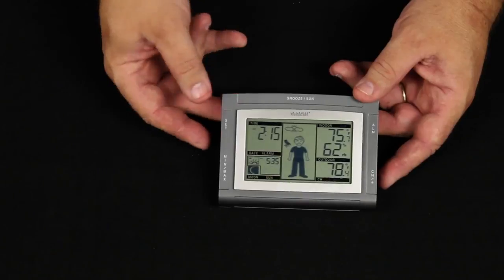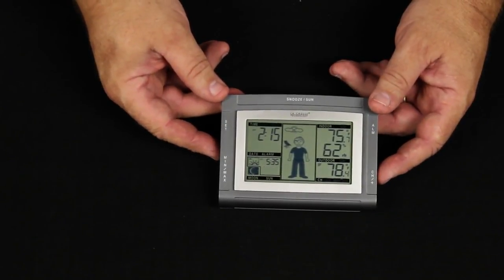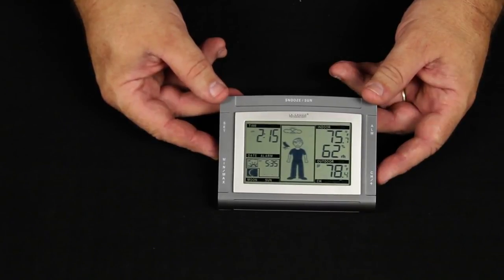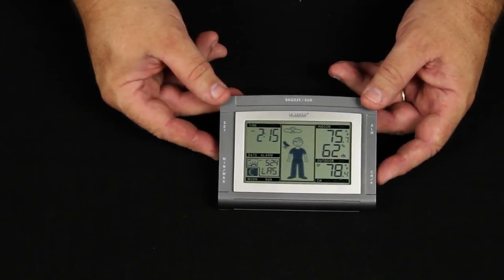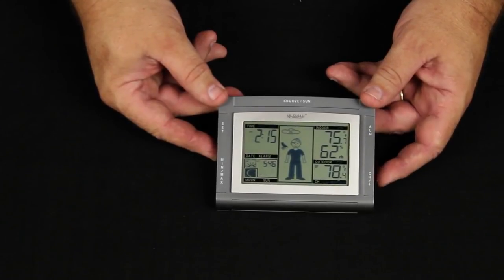Pressing my set button once again flashes an airport designator. Your instruction manual will have a list of designators. You want to set the designator closest to you. The closest to me is La Crosse, Wisconsin. That's LSE and I've set it.